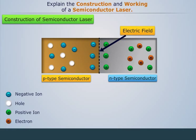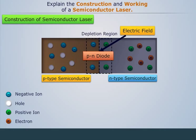The region which consists of only positive and negative ions is known as the depletion region of the P-N junction diode. This complete assembly is also known as the P-N diode.